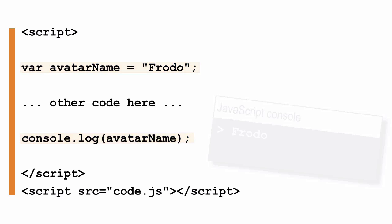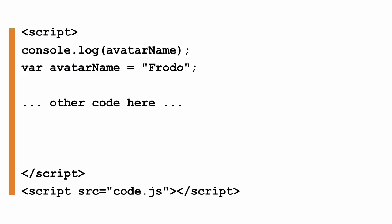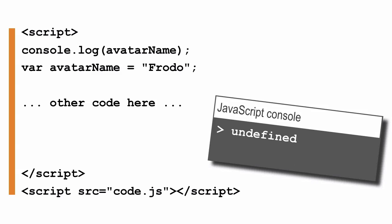But here's where scope in JavaScript already gets a little bit weird. What happens if we move the line of code where we're displaying the value of avatar name using console.log above where we declare and initialize the variable avatar name? We're attempting to display the value of a variable that shouldn't exist yet because we haven't declared it. So you might expect that we'll get some kind of error. But when we run the code, we don't get an error — instead, we see the value undefined.